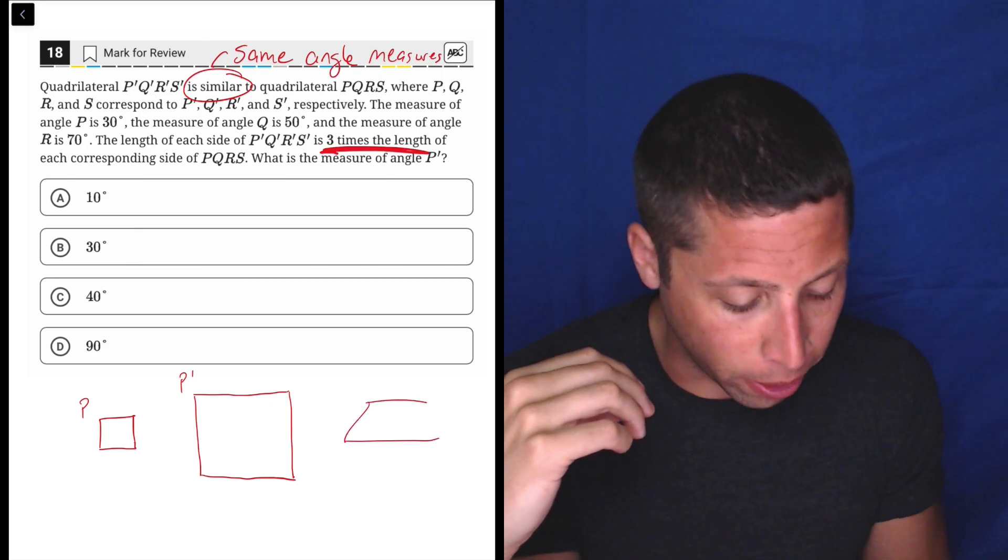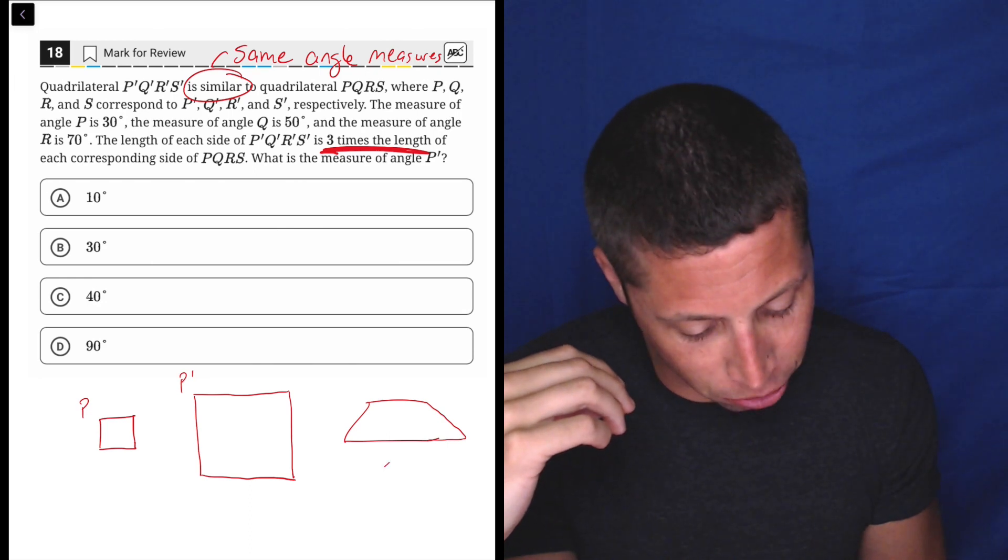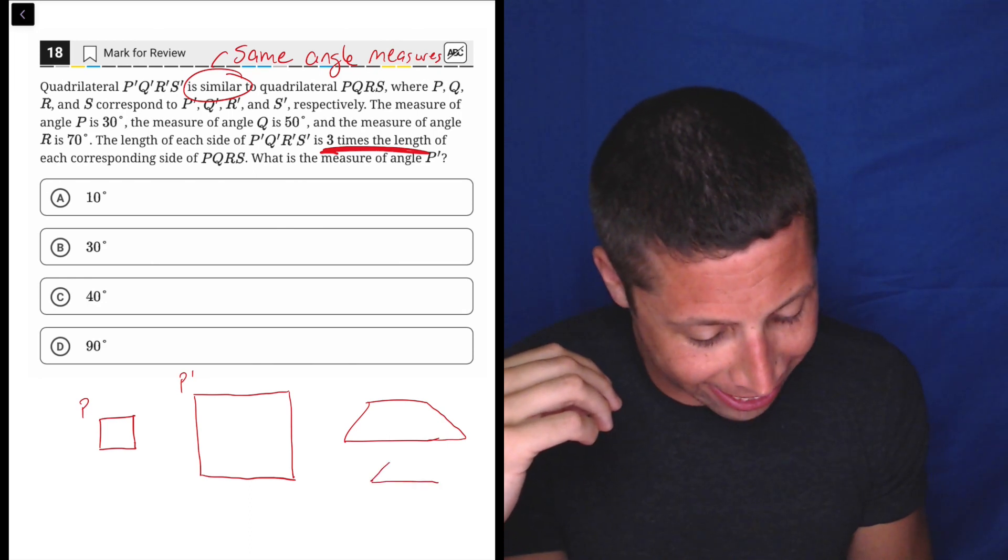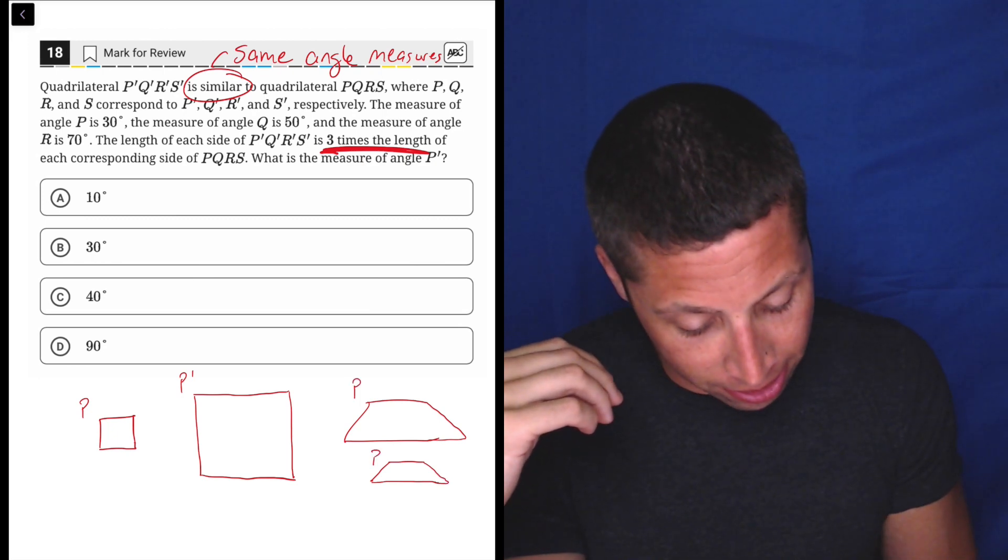So if I did something different, like a trapezoid. Here's a trapezoid. Am I going to be able to draw a smaller version? I'm so bad at this. There we go. And I made this P and this P, P prime.